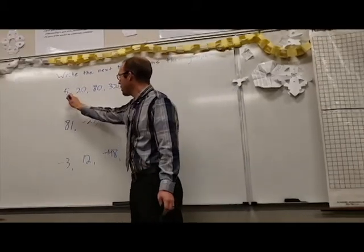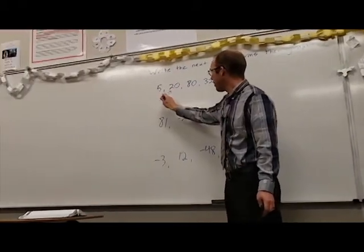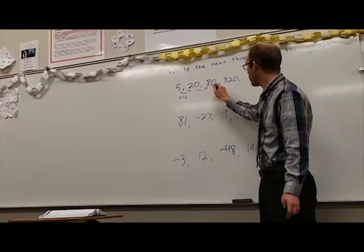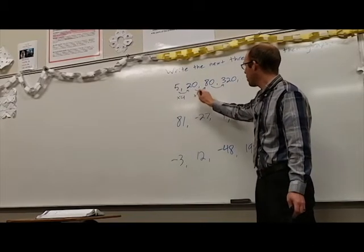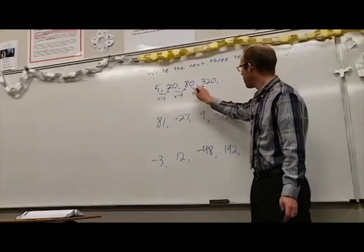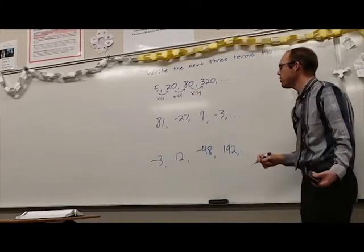For this first example to get from 5 to 20 we're going to multiply by 4. Let's check that with the rest of these. We're multiplying by 4 to go from 20 to 80 and multiplying by 4 to go from 80 to 320.